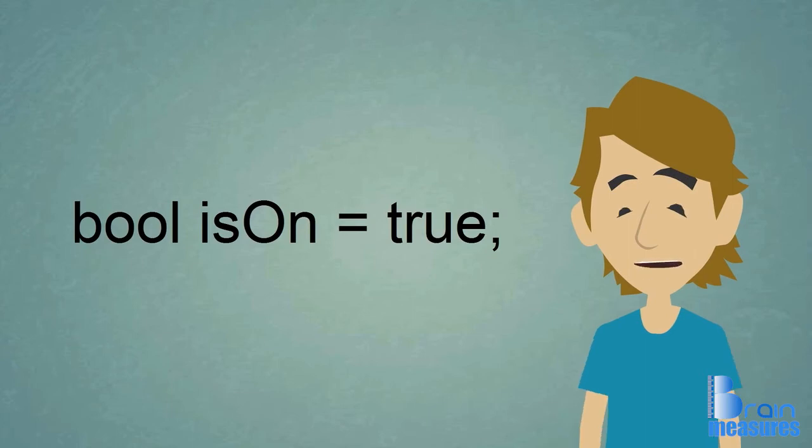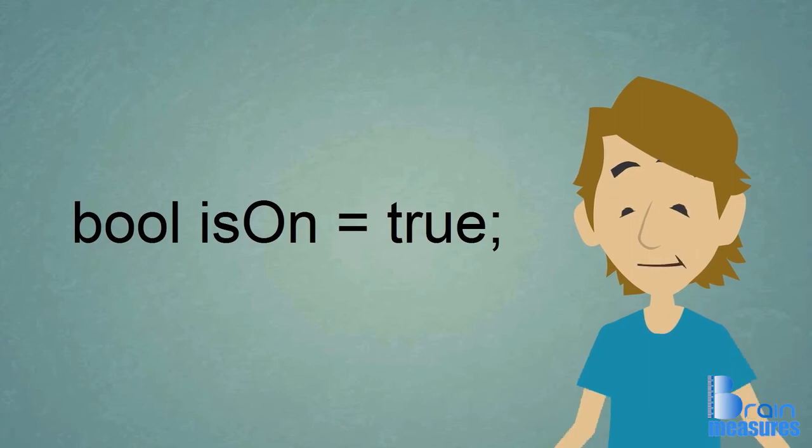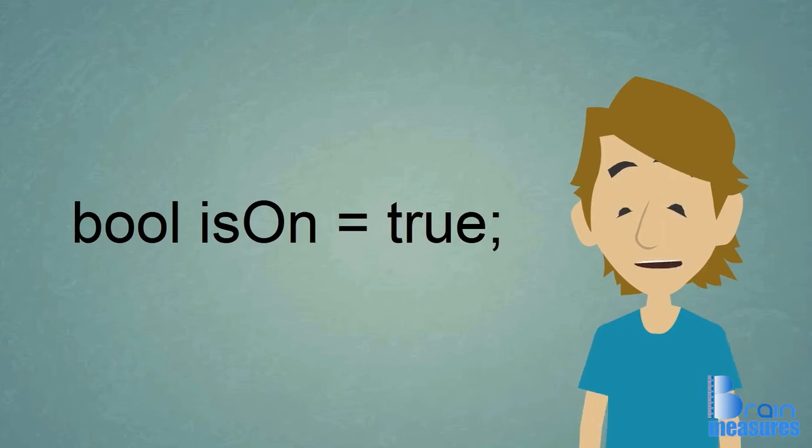Most of the time to declare a boolean variable you have to type the word bool, then type the variable name, and then set it to true or false like the example. Why don't you declare one right now?